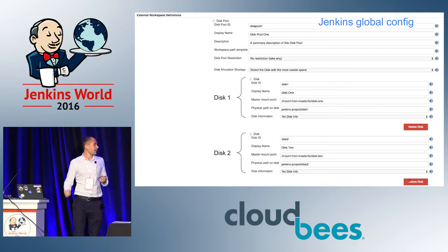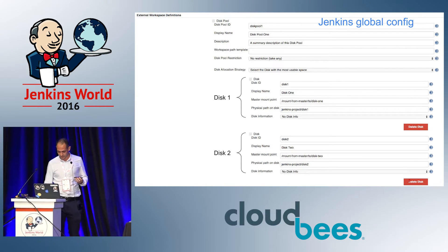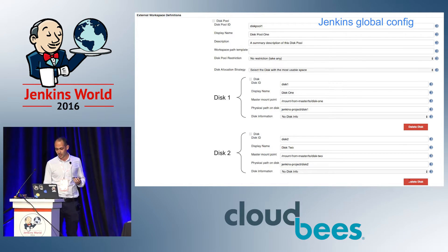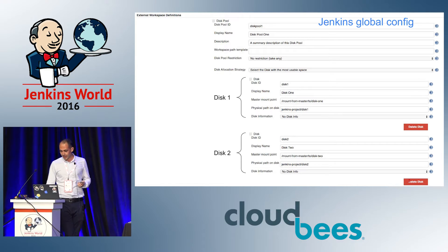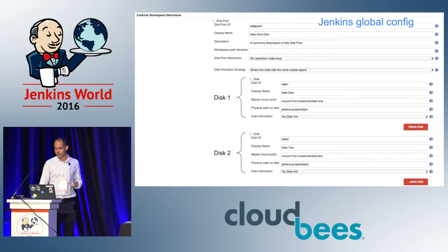Now we are looking at the plugin's configuration. What we have to do is define a disk pool — give it an ID, a display name, and a description. The display name and description are optional. There are also three more parameters used for some advanced features, and they have help files so you can see how to use them.